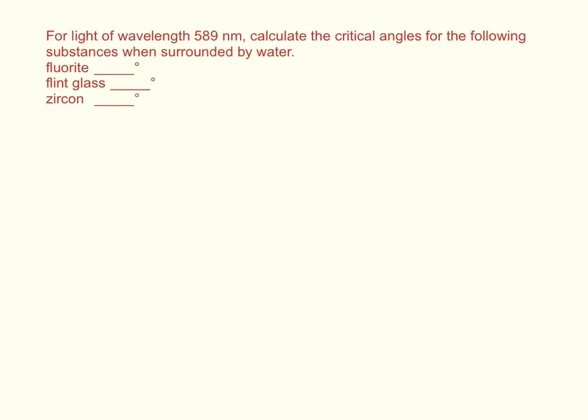For light of wavelength 589 nanometers, calculate the critical angles for the following substances when surrounded by water: fluorite, flint glass, zircon.